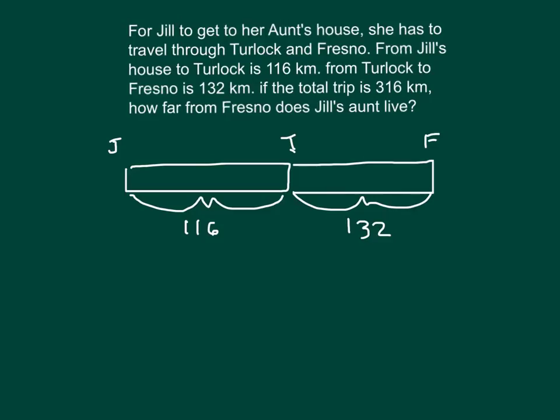And finally from Fresno, we continue on over to the aunt's house. We don't know the distance from Fresno to Jill's aunt's house, but what we do know is that the total distance is 316.